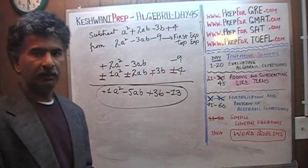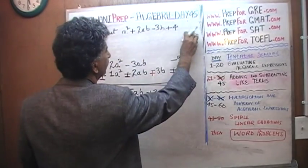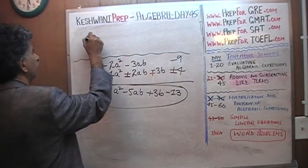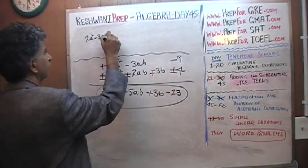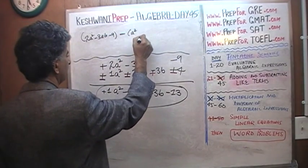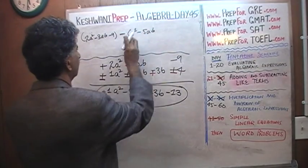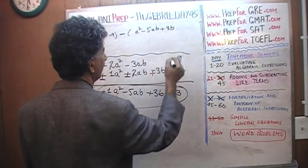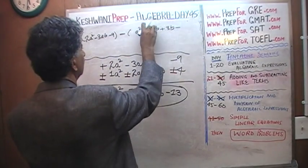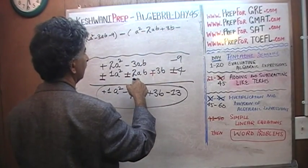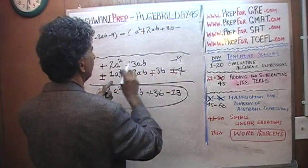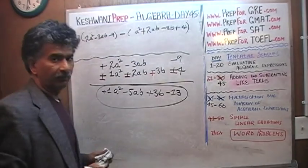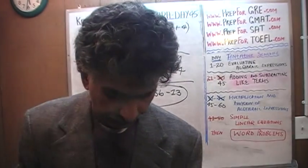Let me verify: a squared minus 5ab plus 3b minus 13. Now we are going to redo the same example using a different method. I need the room, so I will erase the top. Same problem: 2a squared minus 3ab minus 9, and from that we subtract a squared plus 2ab minus 3b plus 4.